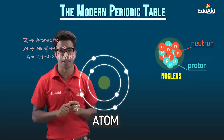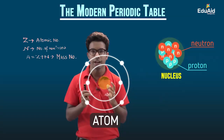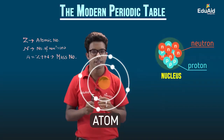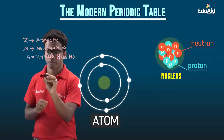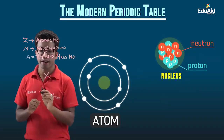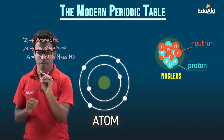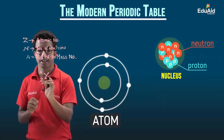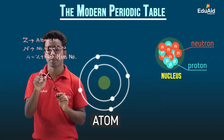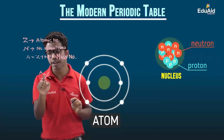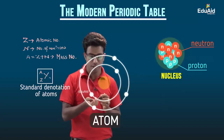There is a standard way to represent an atom. In an atom there are different numbers of protons and electrons, and the standard notation is written as X, where X is the symbol of the atom. Z is the atomic number written on the lower left side, and A, the mass number, is written on the upper left side. So A represents the total number of protons and neutrons, and Z is the atomic number. This is how all atoms are denoted.